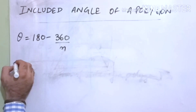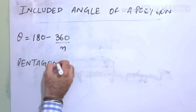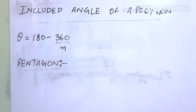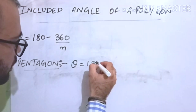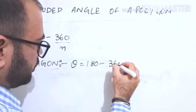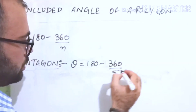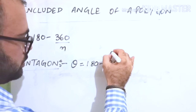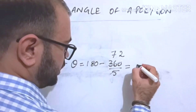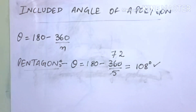For a pentagon, the included angle is: theta equals 180 minus 360 divided by 5, which comes out to be 108 degrees. So the included angle between adjacent sides of a pentagon is 108 degrees.